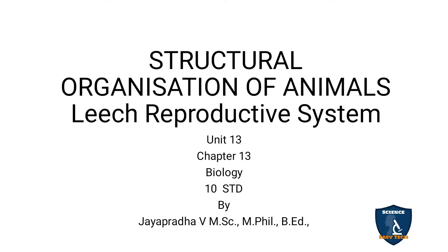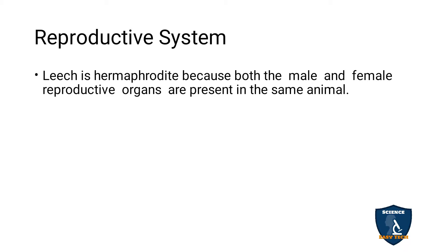Today we are going to discuss the leech reproductive system in the structural organization of animals unit 13, chapter 13 in biology. We have already discussed several systems of leech. Leech is a hermaphrodite animal, meaning both male and female sexes are present in the same organism.